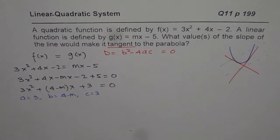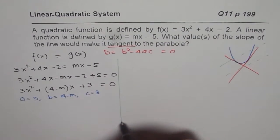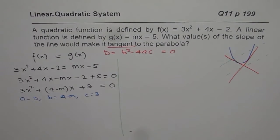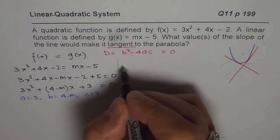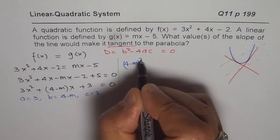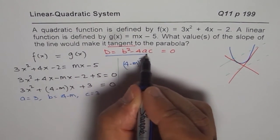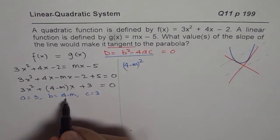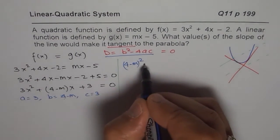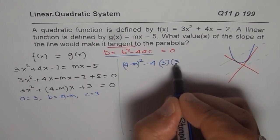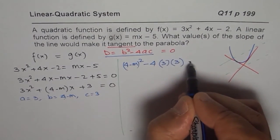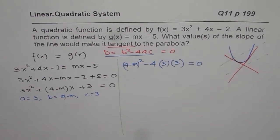So b square minus 4ac is what for us? So b square minus 4ac. Let us do it on the right side itself. And then we will get back to this side and write down our solution. So b square means 4 minus m. Let me write here 4 minus m whole square. We are trying to calculate the discriminant now. b square is 4 minus m minus 4 times a is 3. And c is also 3 for us.